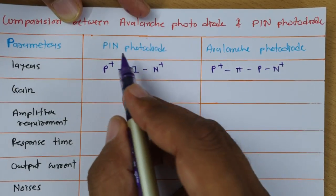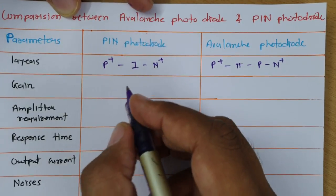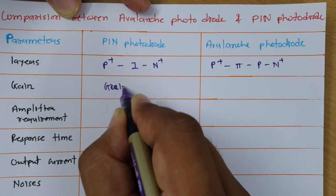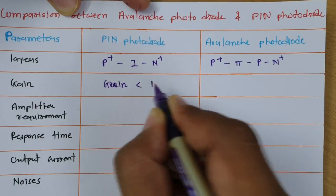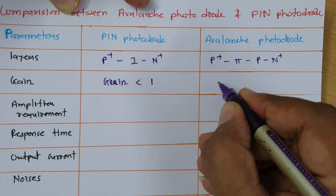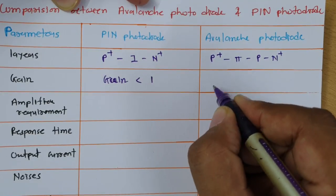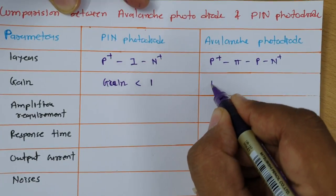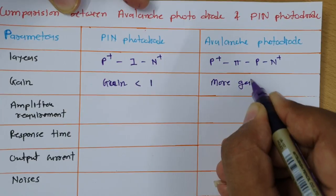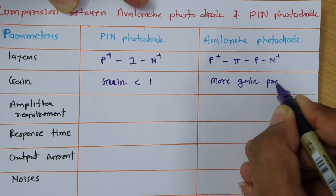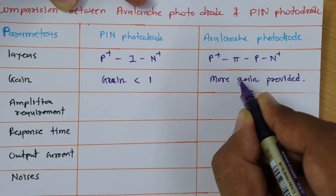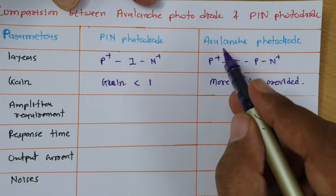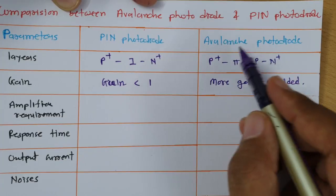Now, regarding gain of the PIN diode: gain is not provided in PIN diode, or one can say gain is always less than 1. In avalanche photodiode, gain is provided with very high magnitude — it could be around 200 or more. The reason is that for different avalanche photodiodes, gains are different, but huge gain is possible with avalanche photodiode.